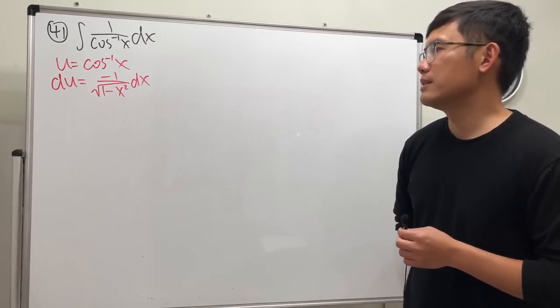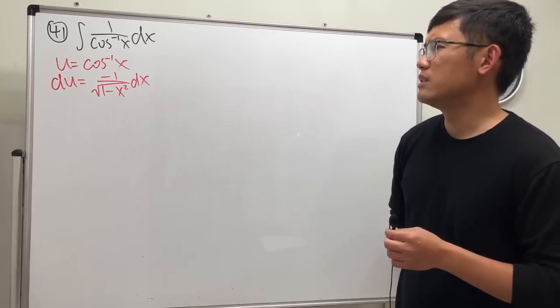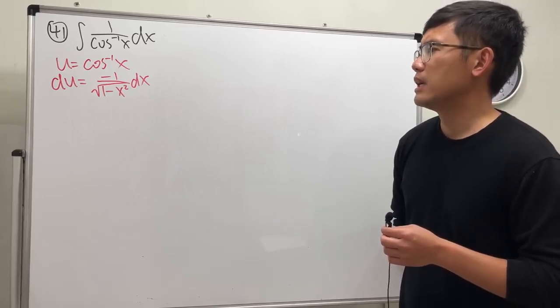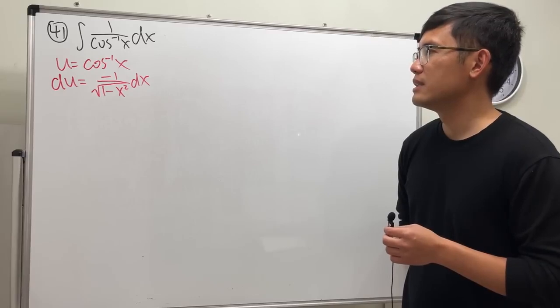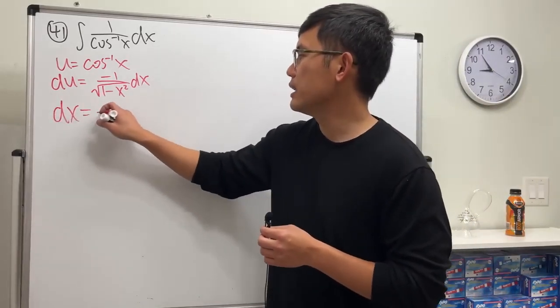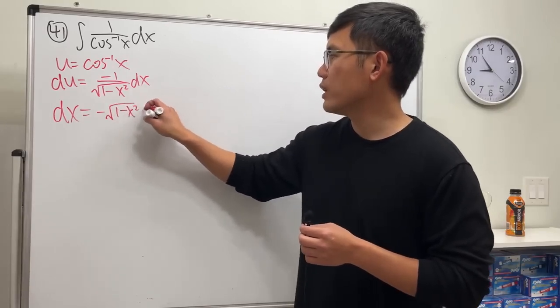But you'll see this right here, it's not really going to get us anywhere. It's going to be more complicated. Let's see. dx equals negative square root of 1 minus x squared du.